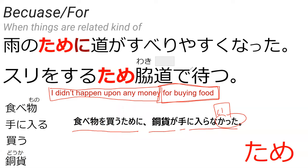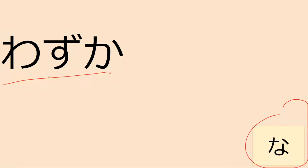Which means 'for buying food, no money came to my hand' — basically. So our next word is wazuka, which is a na-adjective. Wazuka means like a very small amount — minuscule is kind of what wazuka means.